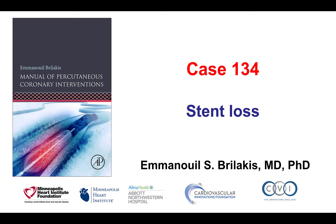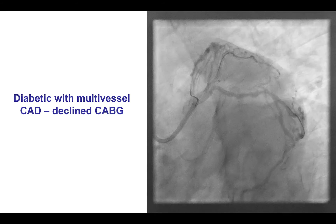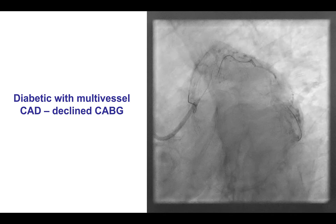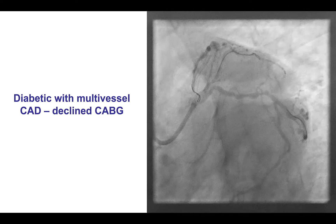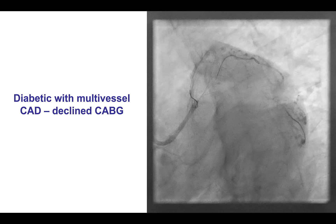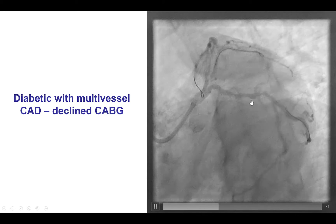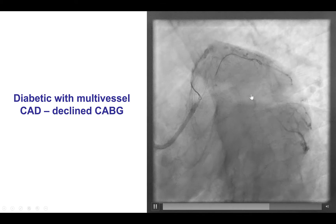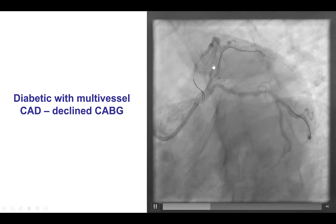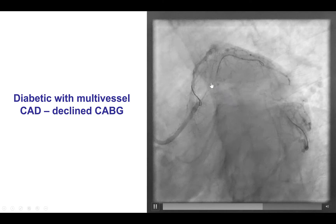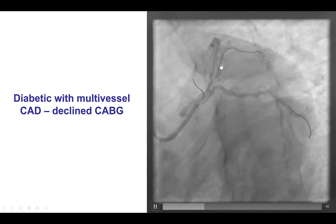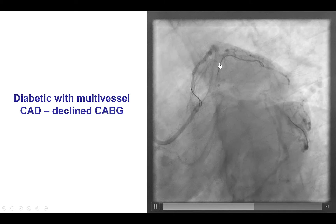This is Manos Brilakis and this is case 134 for the Manual of Percutaneous Coronary Interventions. This is a case of stent loss. The patient had diabetes and multivessel coronary artery disease with significant lesions in the circumflex as well as the left anterior descending artery with a bifurcation lesion with the first diagonal branch.